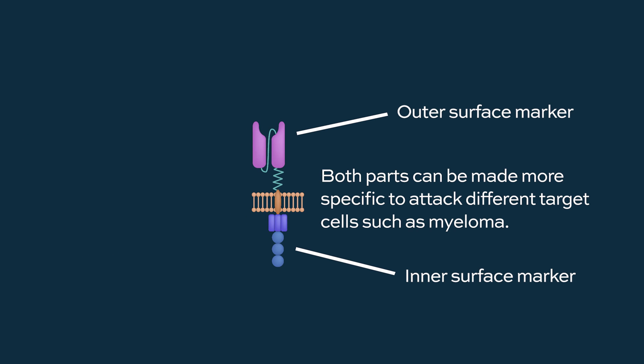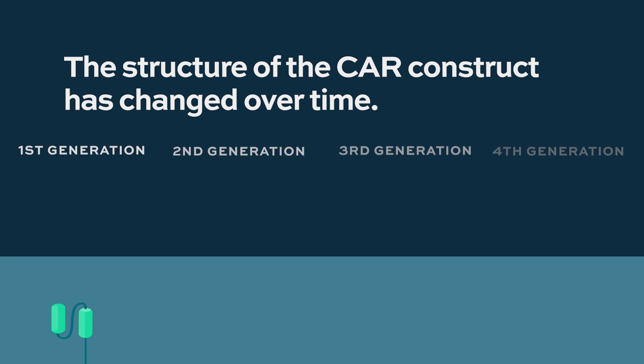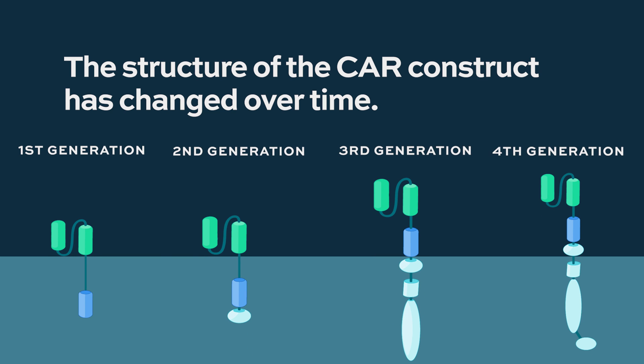Both of those parts can be modified to become more specific and active against the target cells. That's where the field has gone from first, second, and third generation. It's really the second and third generation CAR data that we have in the public domain for lymphoma and myeloma.